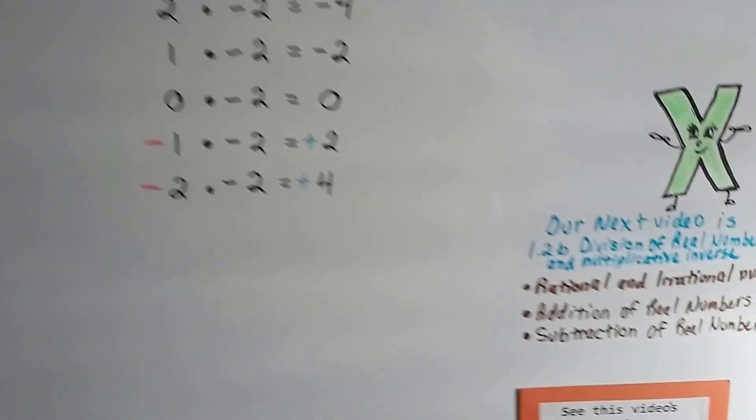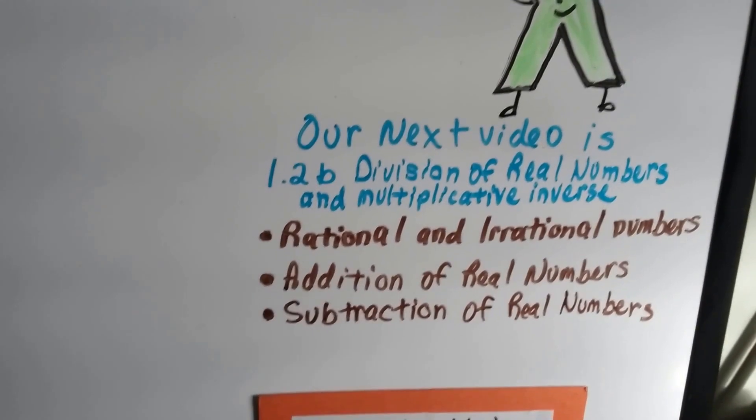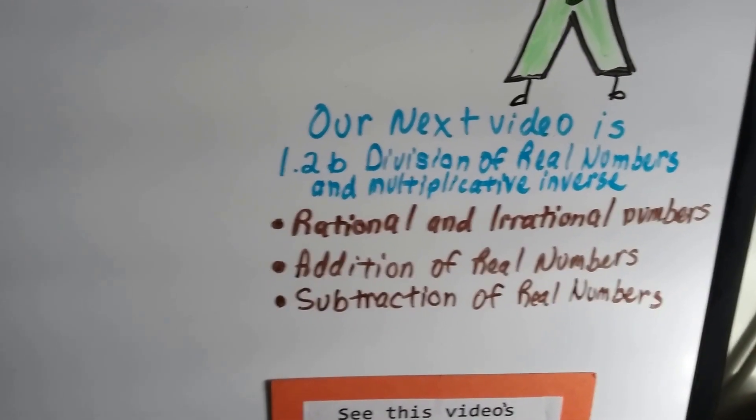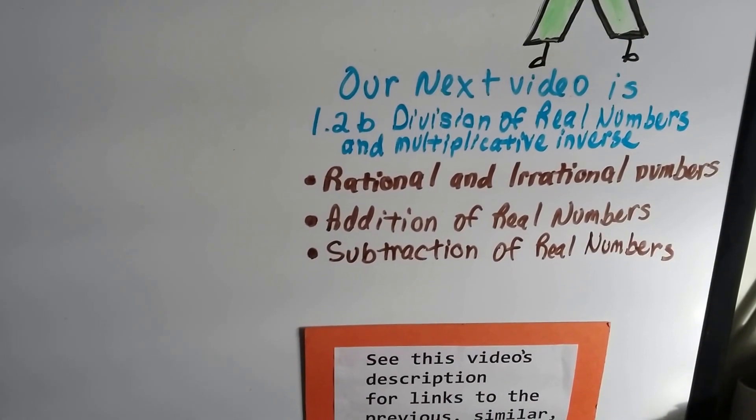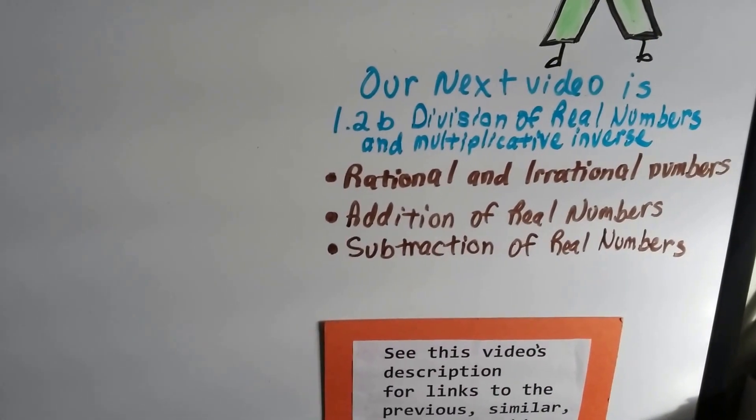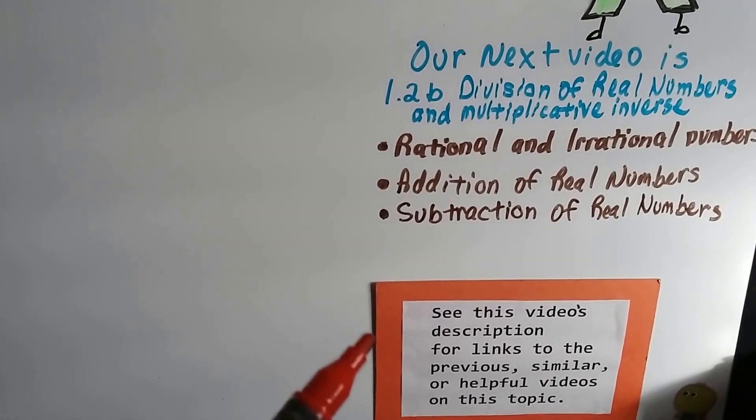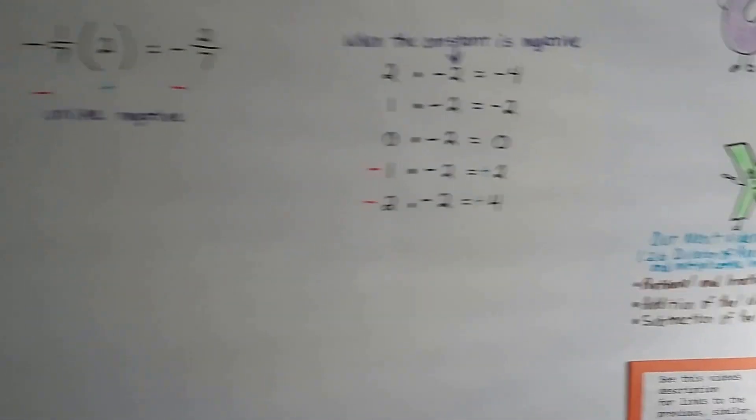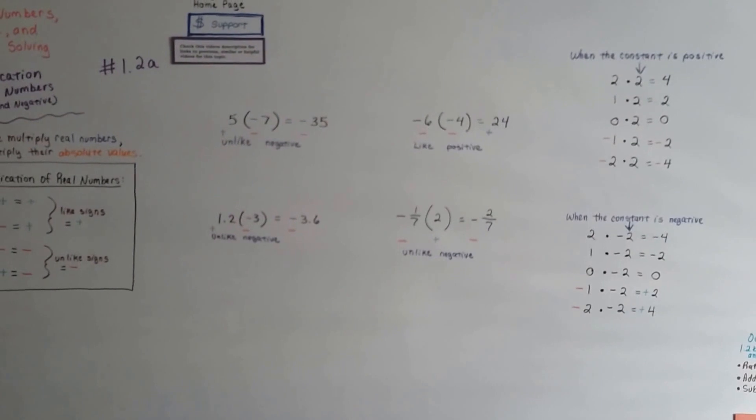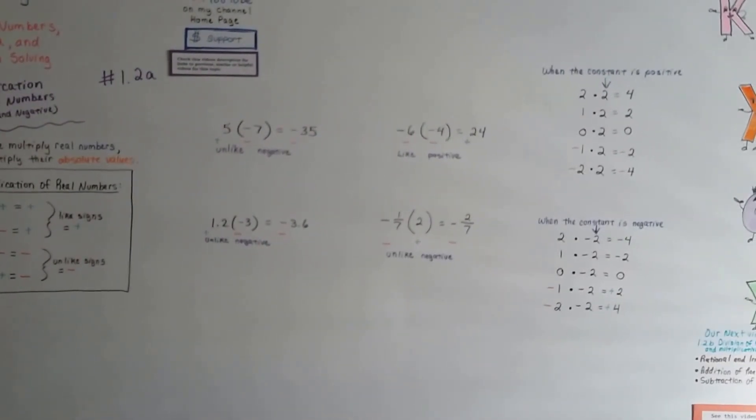Our next video is 1.2b and we're going to talk about the division of real numbers and the multiplicative inverse. And if you want to link to rational and irrational numbers, addition of real numbers or subtraction of real numbers, all you have to do is click on the description of this video. We're going to move on and talk about division and multiplicative inverse. I'll see you there. Bye.